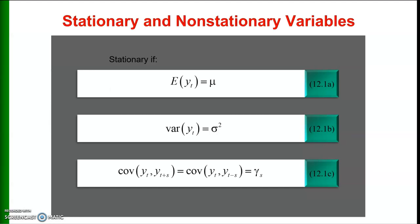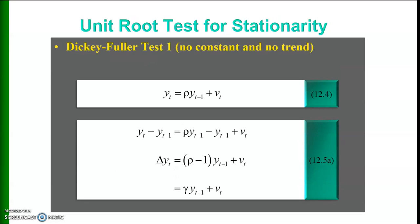We can use unit root testing techniques to identify variables which have a long-run stable relationship with one another. Now let us define what we mean by stationarity. Think of a time series yt at time t. That series yt will be stationary if: first, the expected value of yt is equal to mu; second, the variance of yt is equal to sigma squared; and third, the covariance of yt and yt+s is equal to the covariance of yt and yt-s, and that is equal to gamma s.